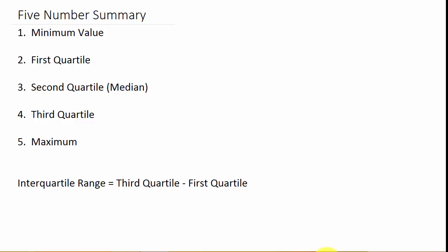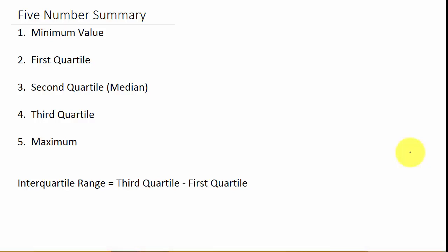This video I'm going to show you how to make a box and whisker plot. There are going to be two examples — I would watch both of them. One example has an odd number of data values and the other has an even number of data values. You're doing the same thing, but there's just a little something you need to know when you're doing an even number of data values.